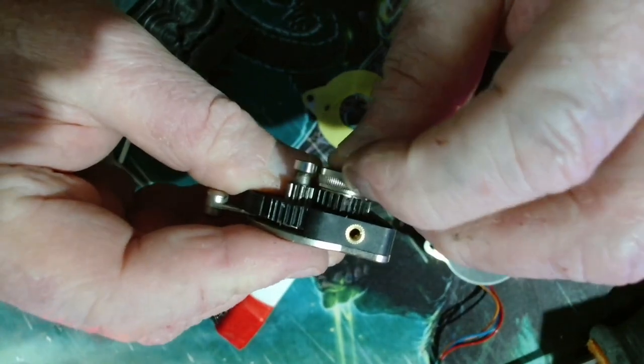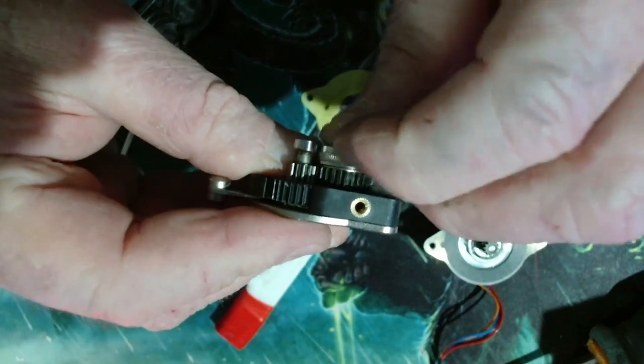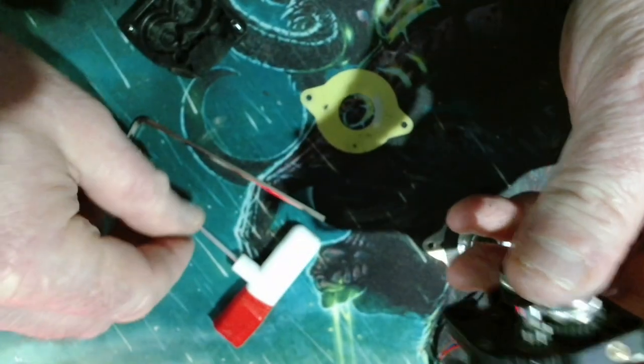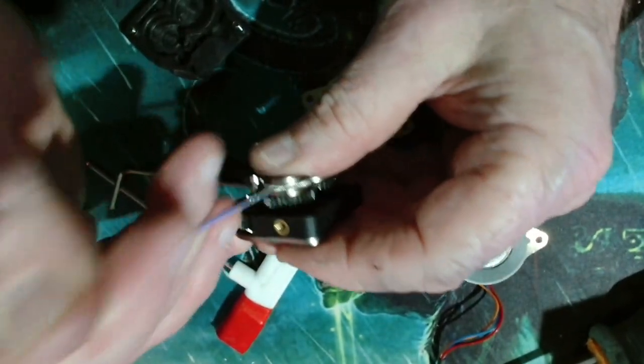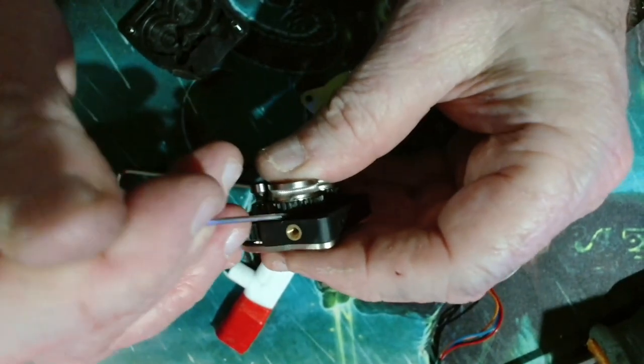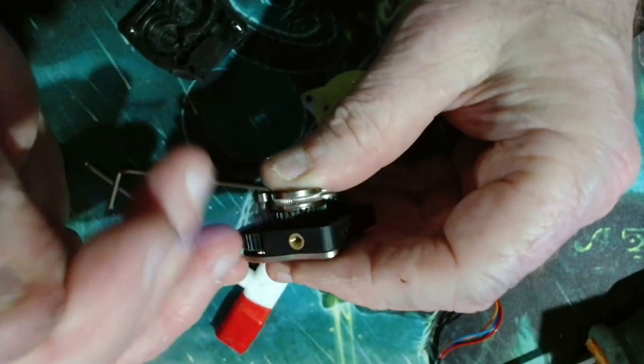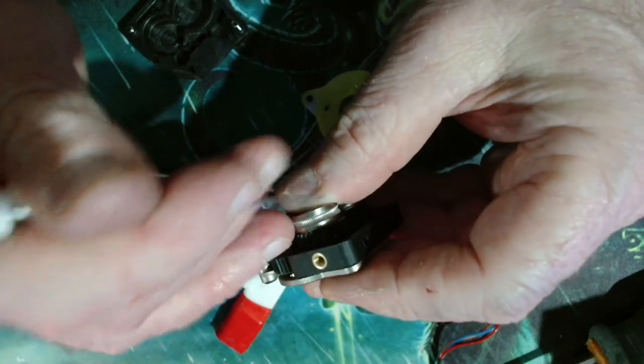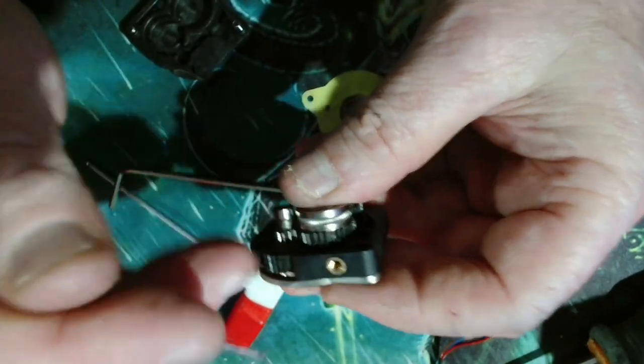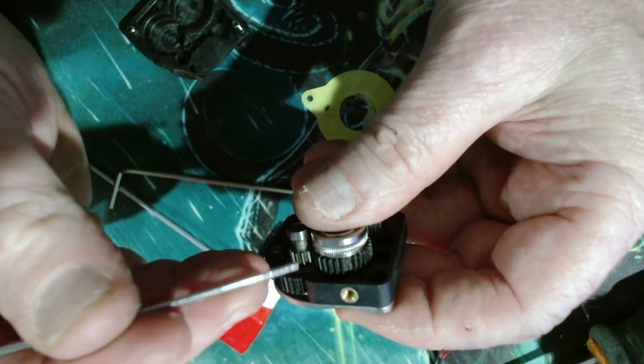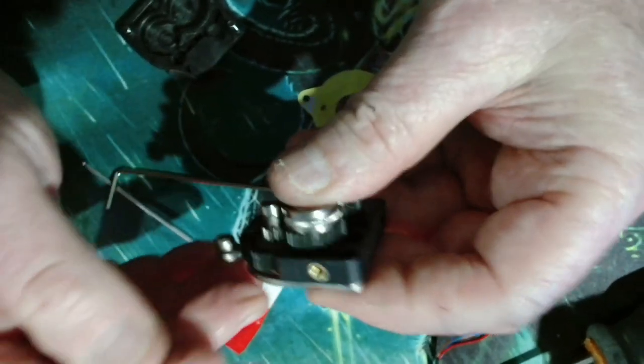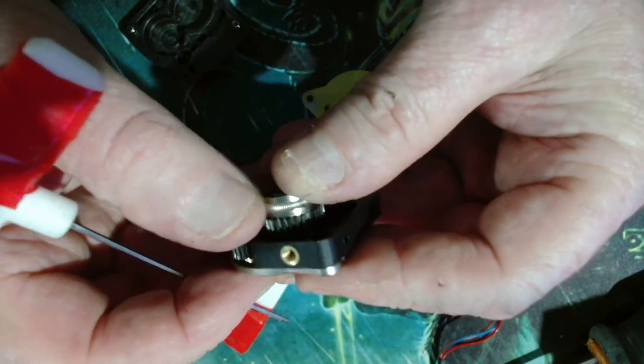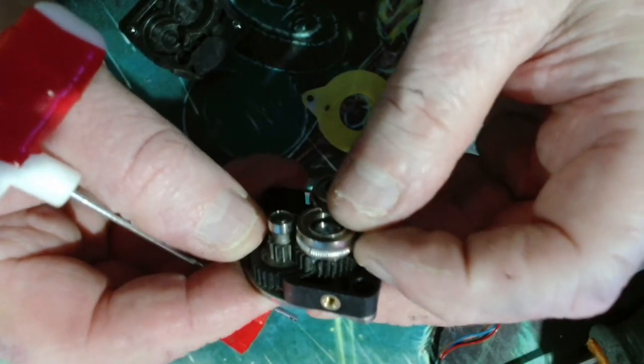So you want to look in all the teeth inside the extruder as well. Just give them a spin. Make sure there's no bits of filament caught in or any crap. What's going on there? Looks a bit funny there, doesn't it? Looks like a tooth's broken. Ooh, that's a tooth broken there too. So that might be causing a problem as well.